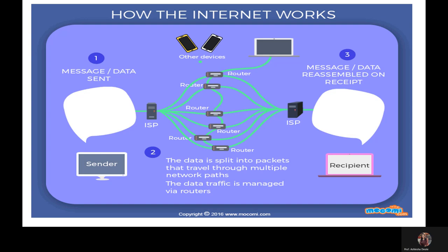In terms of how data flows: first, a message or data is sent. It goes to the ISP — the Internet Service Provider. The data is then split into packets. The data sent by the sender goes to the recipient's ISP, where all data is received first at the internet service provider server, and then it goes to the message recipient's side.